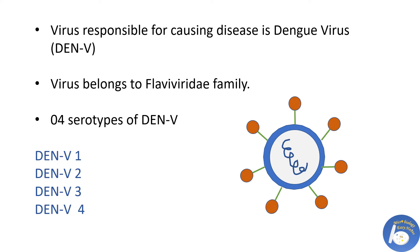The virus responsible for dengue is the dengue virus. It belongs to the Flaviviridae family. There are four serotypes of dengue virus, and each serotype has a different interaction with the antibodies in human blood serum. These four serotypes are DENV1, DENV2, DENV3, and DENV4.